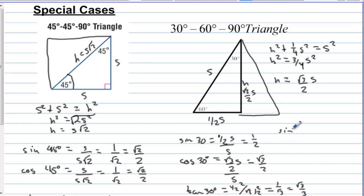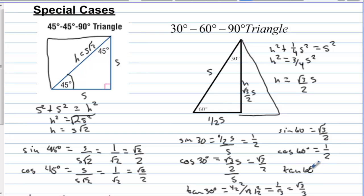Sine of 60 degrees is opposite over hypotenuse, which is square root of three over two. Cosine of 60 degrees is adjacent over hypotenuse, which is one-half. Tangent of 60 degrees is opposite over adjacent, which is square root of three over two over one-half, giving just square root of three. Notice that sine of 30 equals cosine of 60, and sine of 60 equals cosine of 30 — this will always happen with complementary angles.